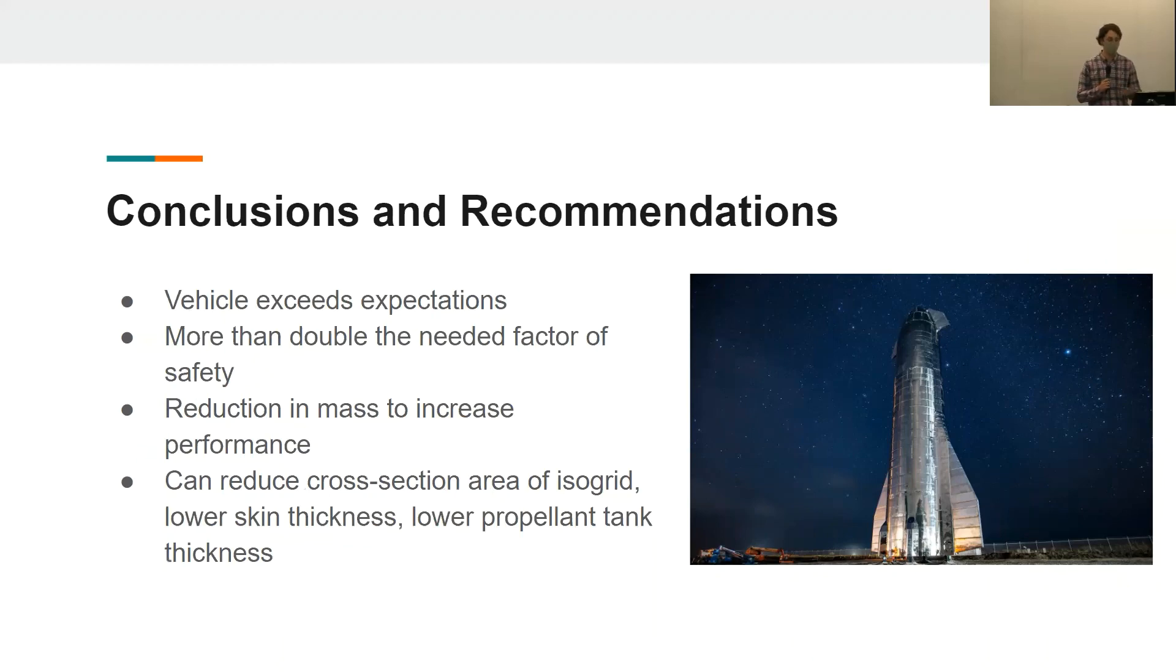Different ways of doing this is to reduce the cross-sectional area of the isogrid. You can also lower the skin thickness or lower the propellant tank thickness of the fuel tanks. And that concludes our presentation.